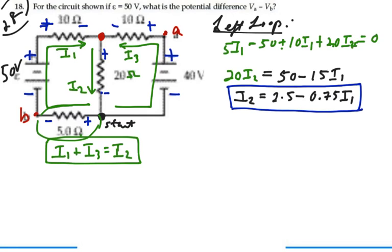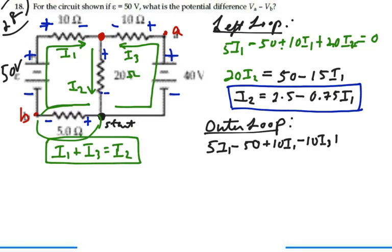Now I want to find I3 in terms of I1. So I'm going to look at the outer loop. Using the same starting point and going clockwise, I will have, I'll enter this 5 ohm resistor on the bottom first. So I'll have 5 I1 minus 50 volts for the battery. Plus 10 I1.